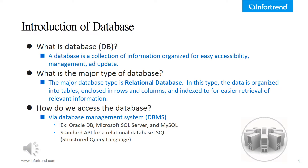What is a database? A database is basically a collection of information that is organized, allowing you to easily access, manage, and update any data in the structure. One major type of database is called a relational database, which means the data are organized into tables with columns and rows, and are indexed for seamless retrieval of relevant information.